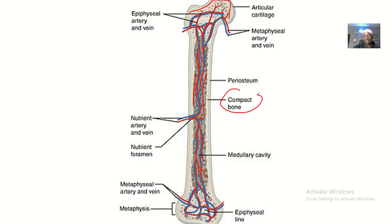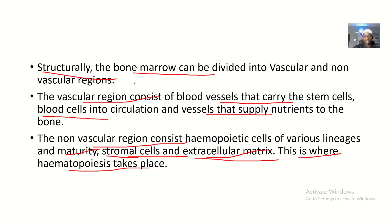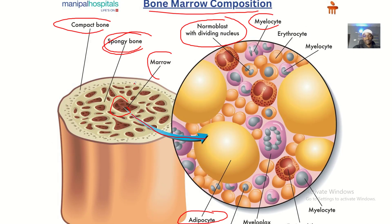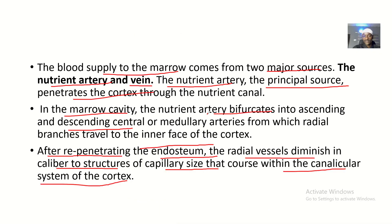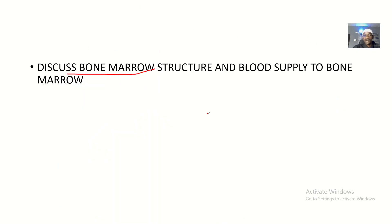In summary, the bone structure has compact bone on the outside, then spongy bone, and from the spongy bone that's where we have the bone marrow proper. The nutrient artery and the nutrient vein penetrate through the nutrient foramina or the nutrient canal. That's how the bone marrow structure is organized, and that's how blood supply to the bone marrow actually occurs.